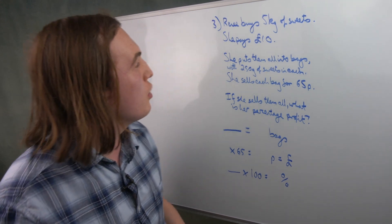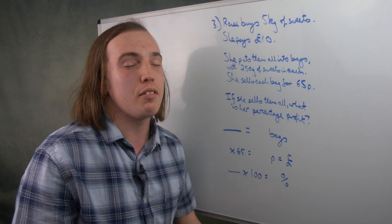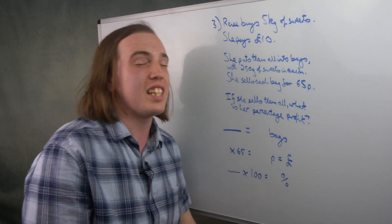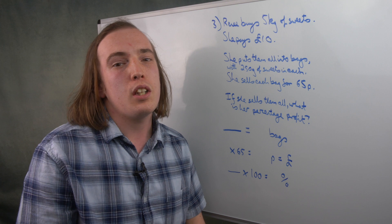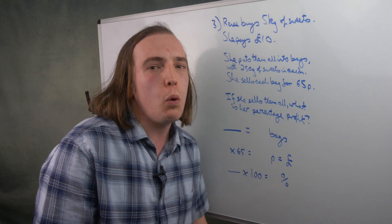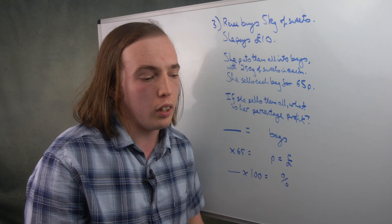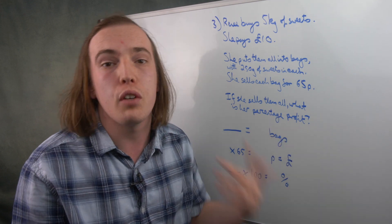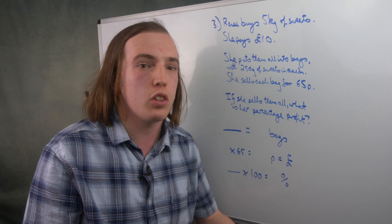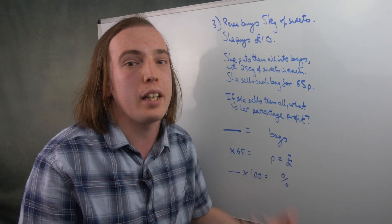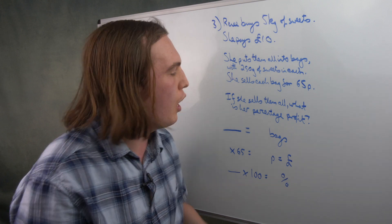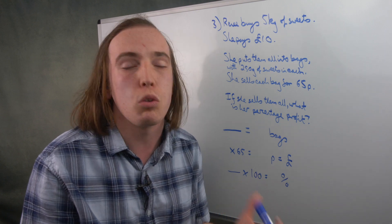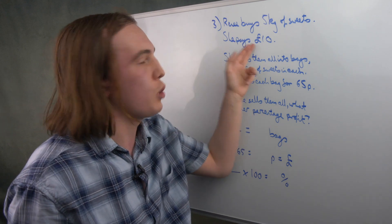It's another wordy question. We're told that Renee buys 5 kilograms of sweets for a total of £10, puts them into bags with 250 grams of sweets each, and sells them for 65p. If she were to sell them all, what would her percentage profit be? The wording is very important. We need to identify what's ultimately being asked — percentage profit — meaning how much money she earns from selling the bags versus how much she paid, expressed as a percentage of what she paid at the beginning.